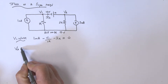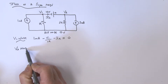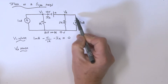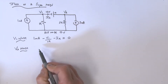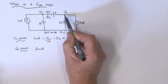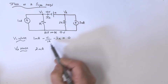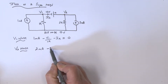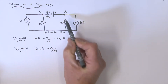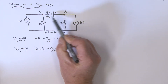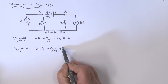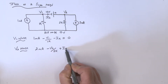Now let's look at the V2 node. What's coming into this node? We've got 2 milliamps coming in, then this current which is minus V2 over 2k, and then we have Ix which we've defined as coming in this direction, so it's a plus Ix. All of that is equal to zero.